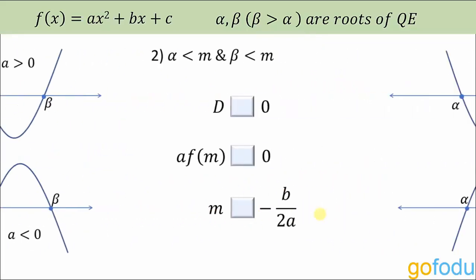Next question: the number m is greater than both roots alpha and beta. D is greater than zero again — since the roots are distinct, D cannot equal zero. For a·f(m): f(m) is positive and a is positive, so their product is greater than zero; when a is negative, f(m) is also negative, so again the product is greater than zero. In both cases, the point −b/2a is less than m, so m is greater than −b/2a.